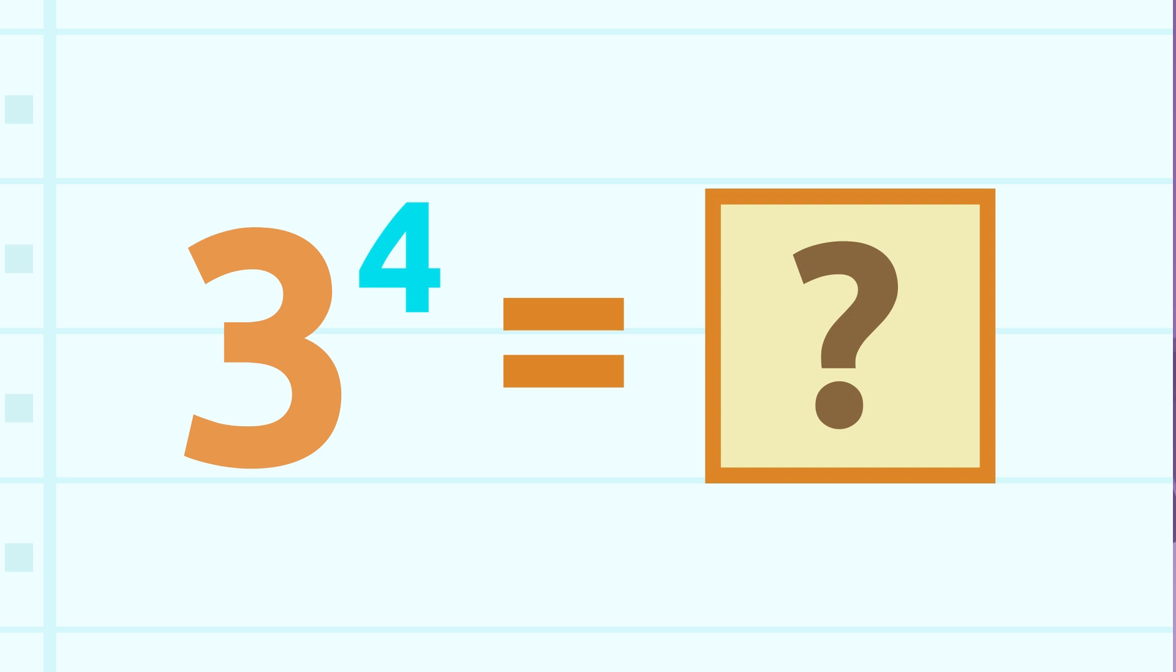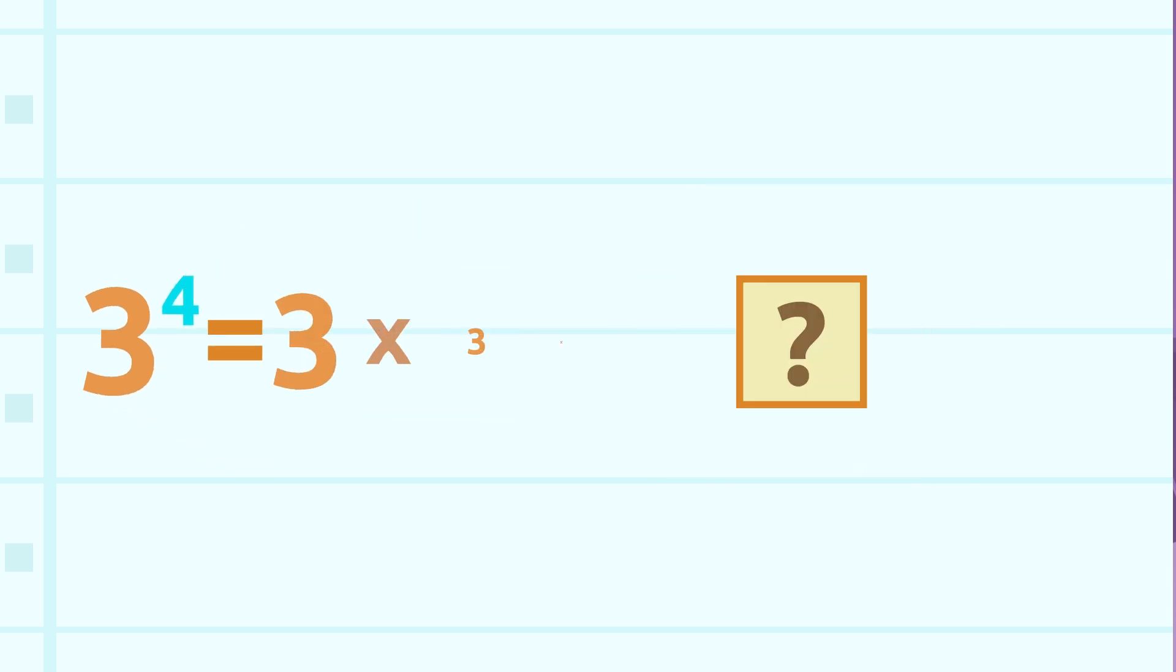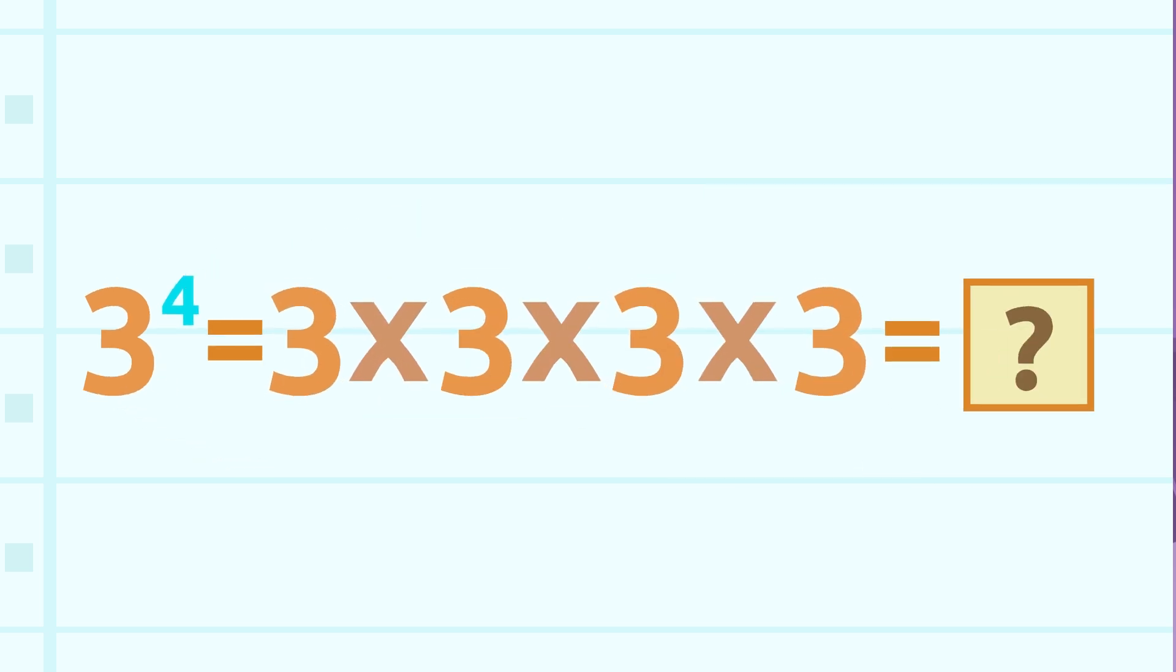Easy right? Let's look at another example. This one is easy: three to the power of four. What do we need to do? We need to multiply the base by itself the number of times indicated by the exponent. This means that we should multiply three by itself four times.